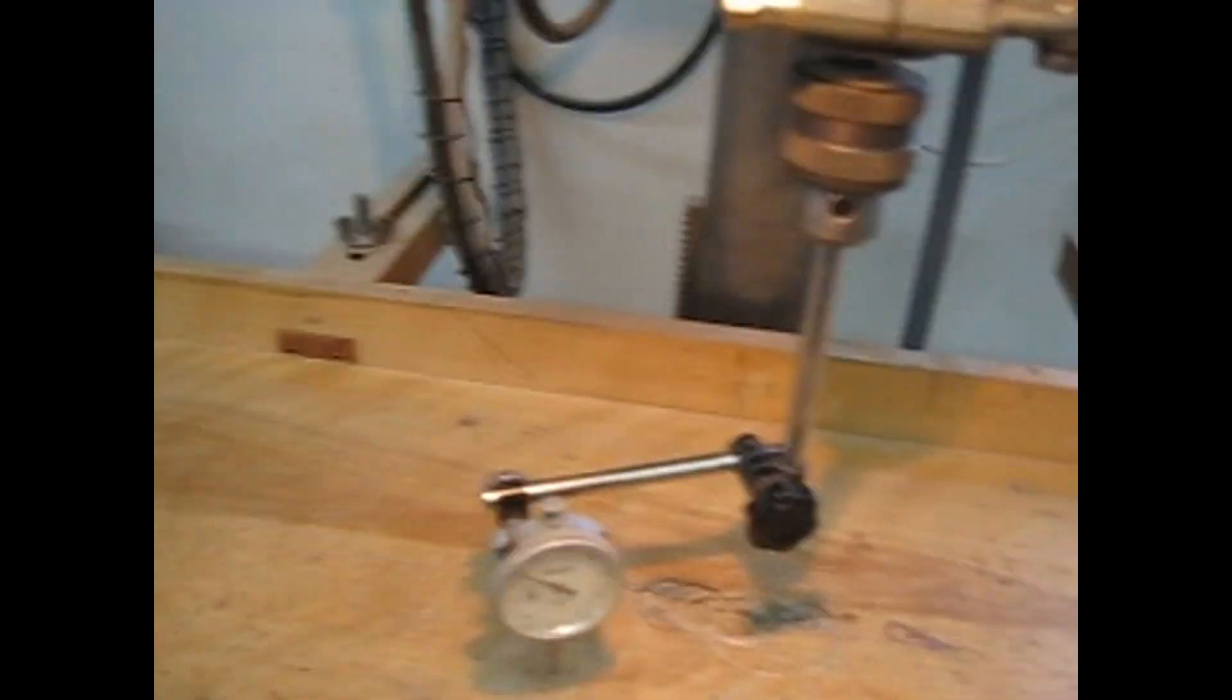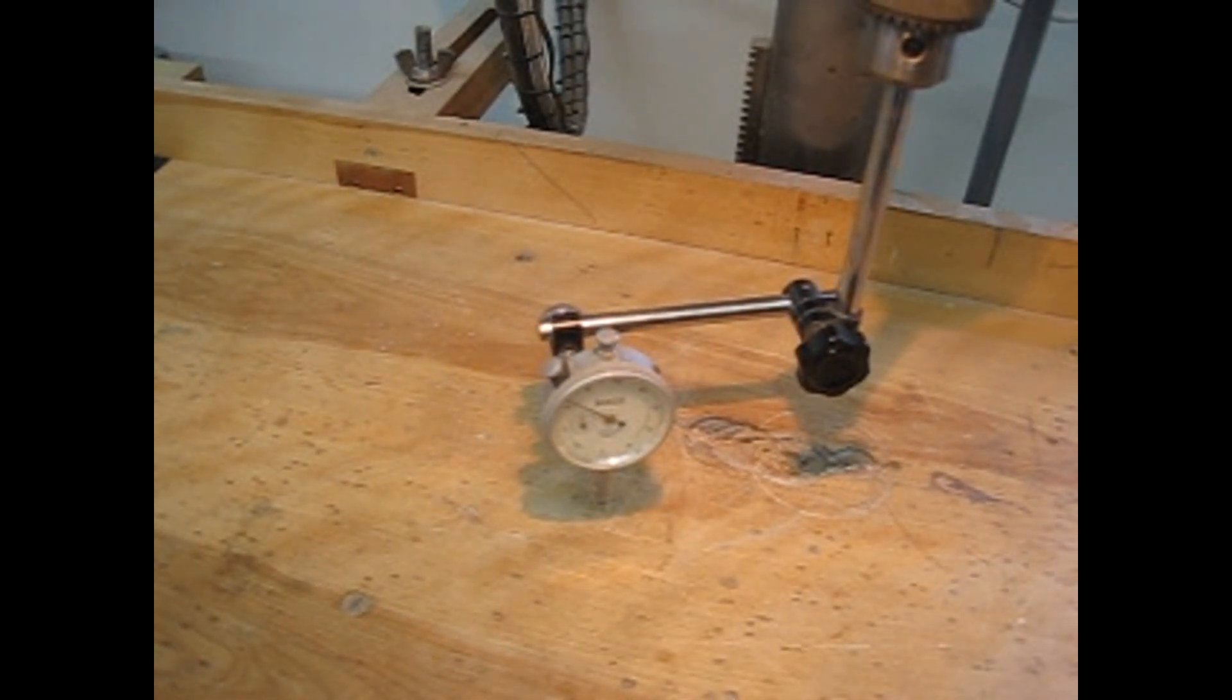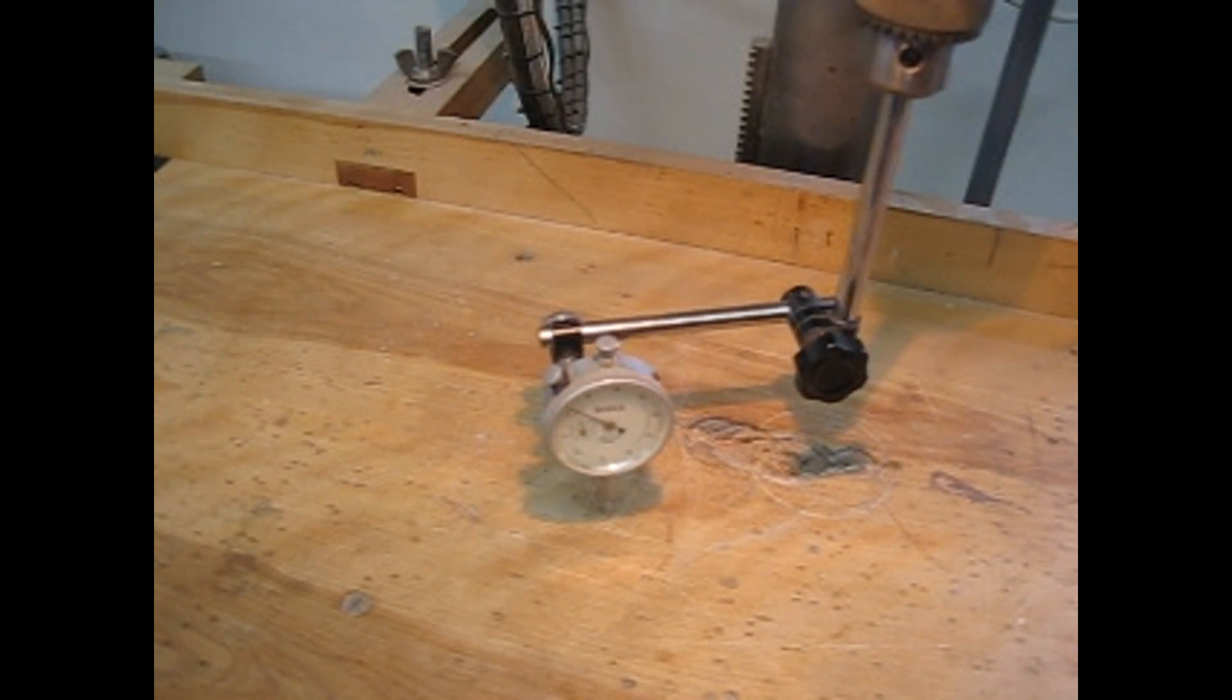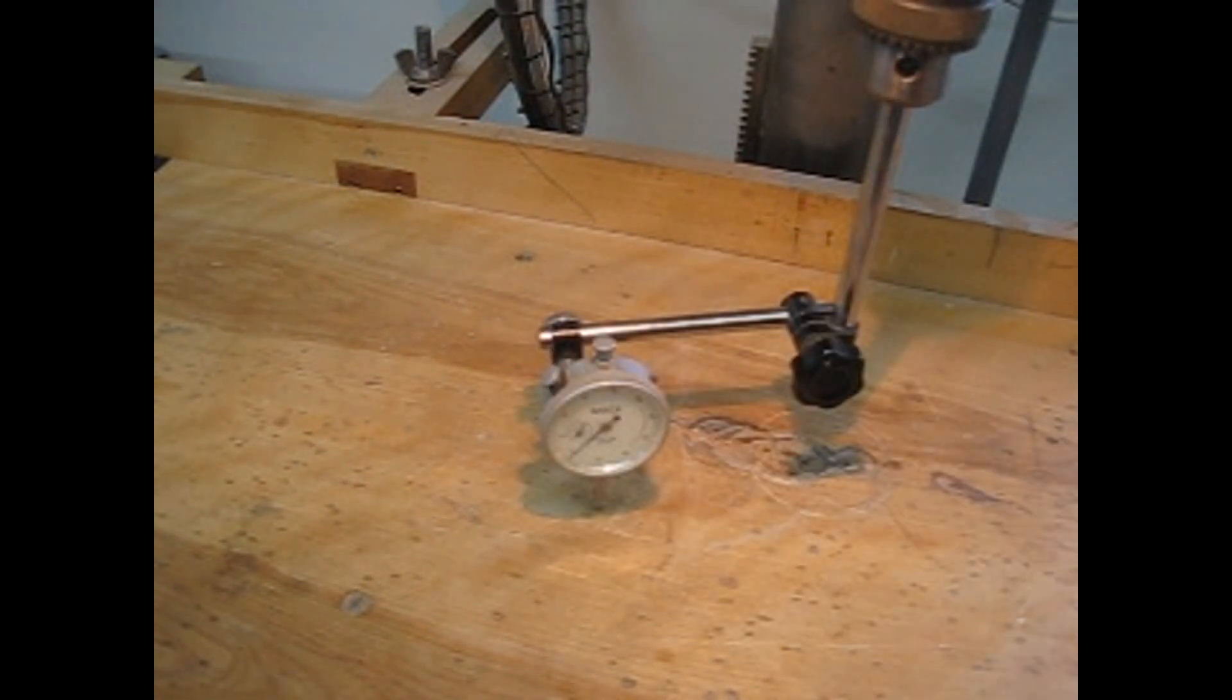We're going to lower our chuck now until it reads. The dial indicator is reading. I'll get it close to zero. We're going to lock off the height there. And I'll set that to zero.